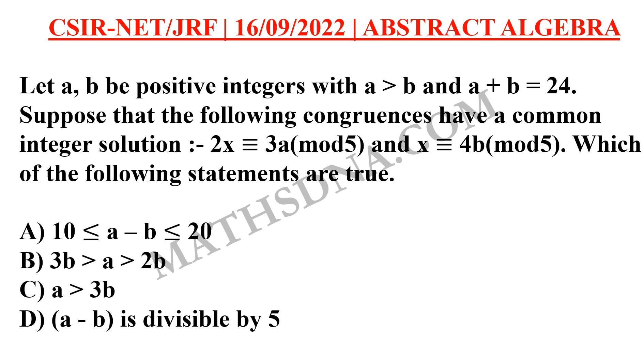This was a very simple question, and you could have easily solved it by just one thing. Now, let us solve it. Firstly, it is given to us that a and b are positive integers. Also, a is greater than b, and a plus b is equal to 24.